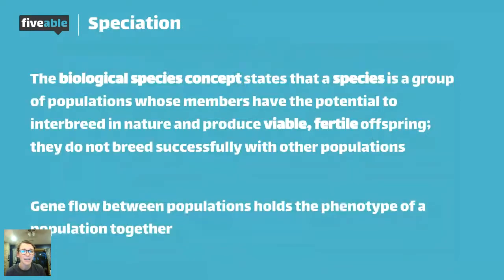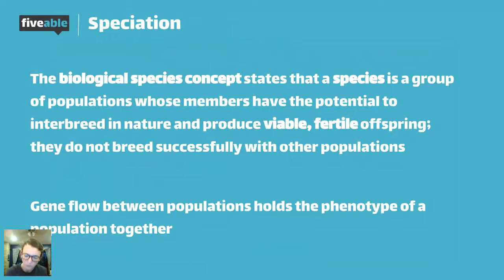A really important concept: if we're talking about speciation, which is what macroevolution is, we need to define what a species is. We actually have a number of different ways to identify or name what a species is. There are four major ways, but the most commonly accepted is the biological species concept. This defines two organisms as the same species based on whether or not they can produce viable, fertile offspring.